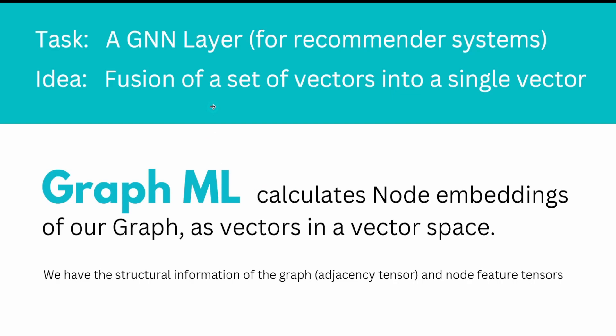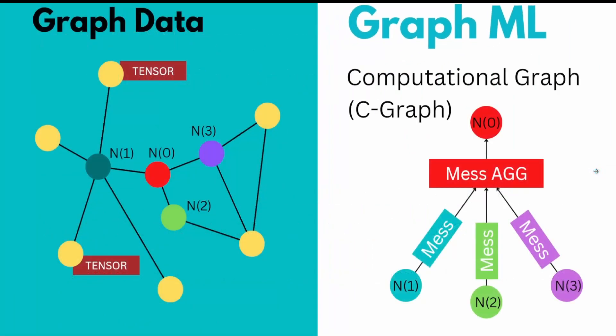I showed you in one of my last videos that for GraphML we have graph neural network layers for recommender systems that fusion a set of vectors into a different single vector.